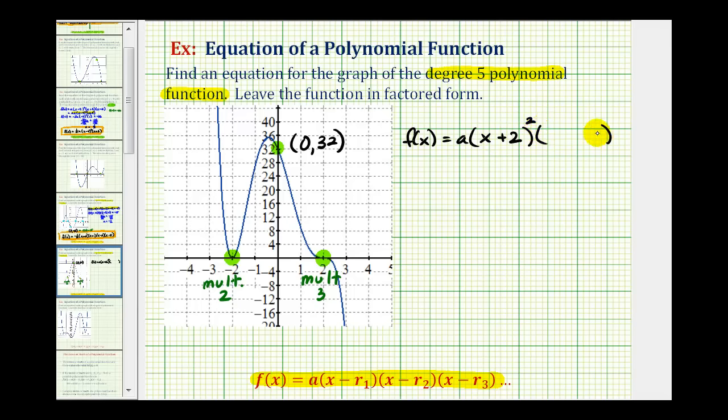The next zero is x equals positive two, which means you must have a factor of x minus two. But because this is a triple zero or has multiplicity three, we'd have three factors of x minus two or the quantity x minus two to the third power.